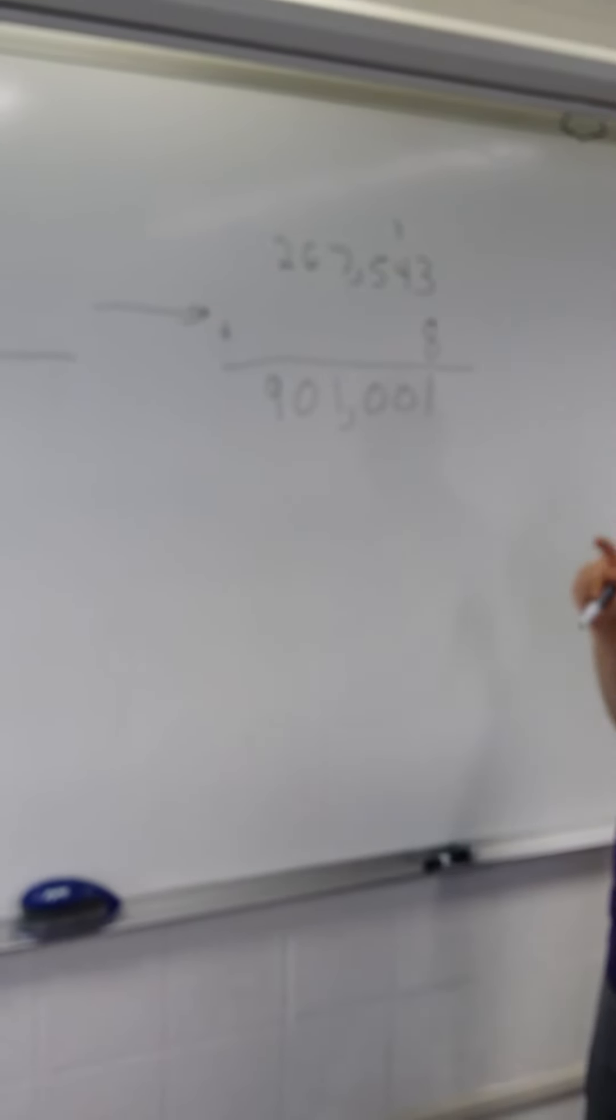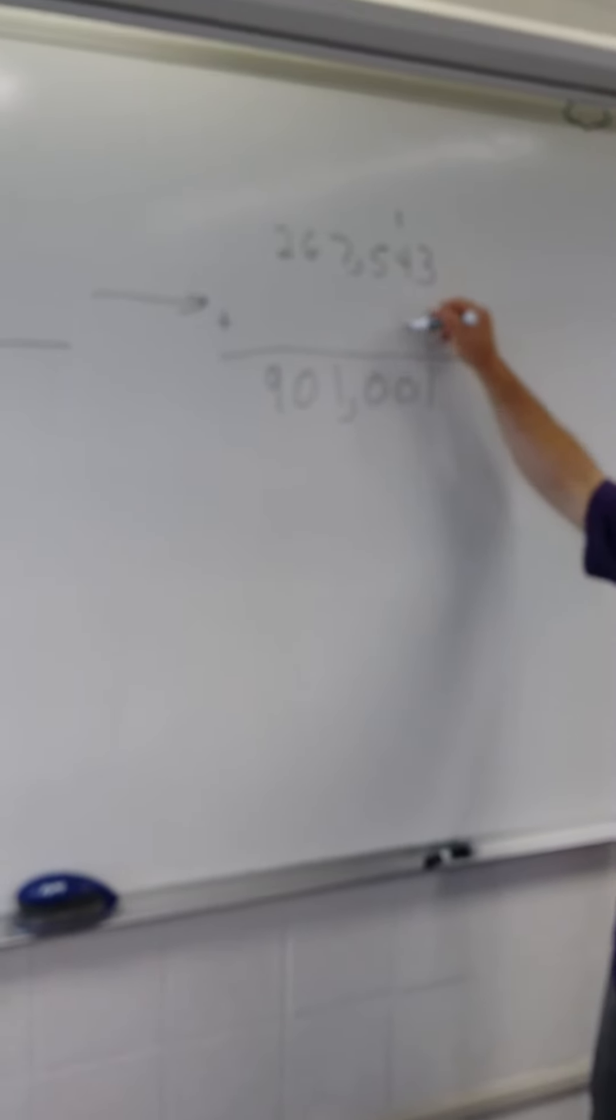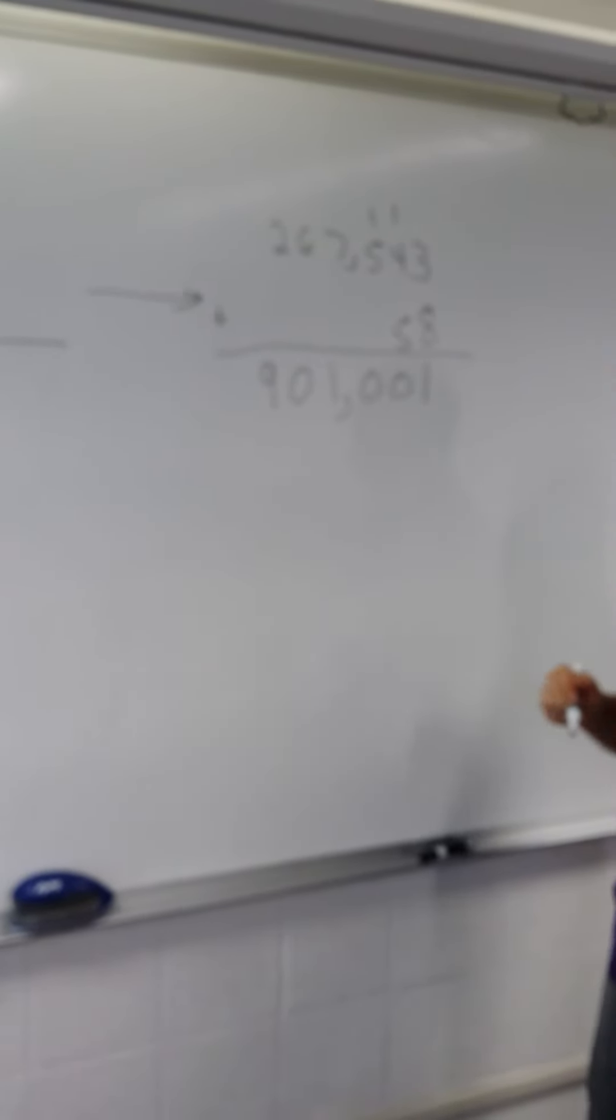And we have 5, and Joslin, what do we add to 5 to get to 10? 5. Again, we carry the 10 again.